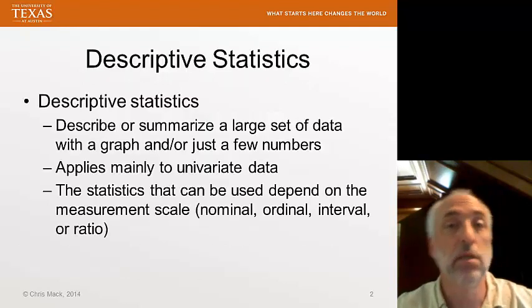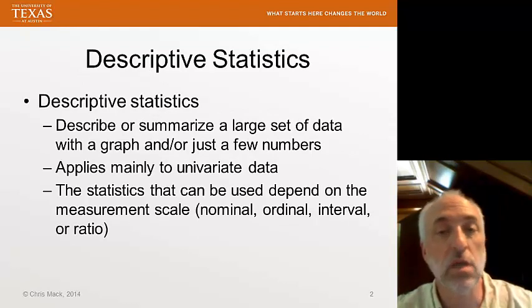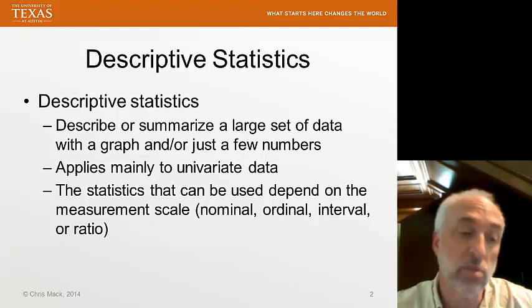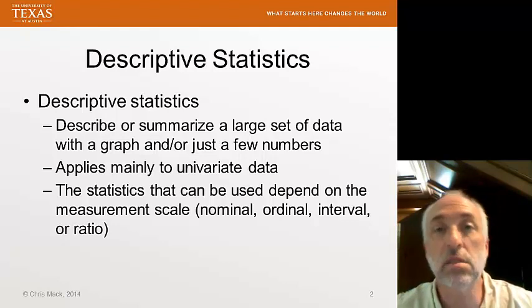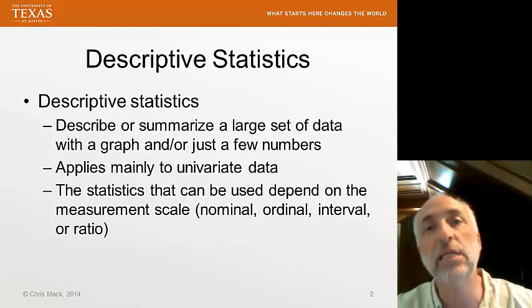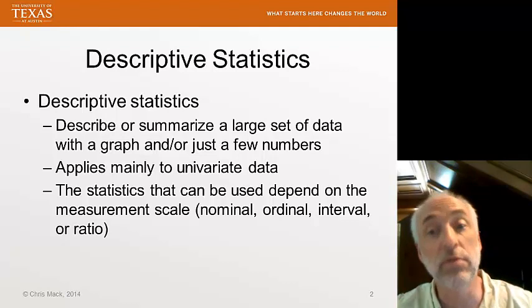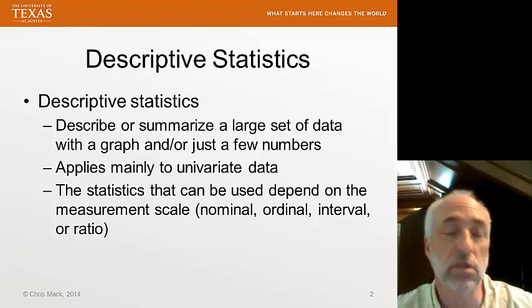Last time, we talked about the definition of descriptive statistics. This is a summary of a large set of data with just a few numbers. Sometimes we can summarize with a graph, but usually what we're trying to do with our descriptive statistics is to summarize the basic tendencies of the data with just a few numbers. We apply mainly descriptive statistics to univariate data, although later on we'll talk about correlation and the correlation coefficient, which is a descriptive statistic for bivariate or multivariate data.